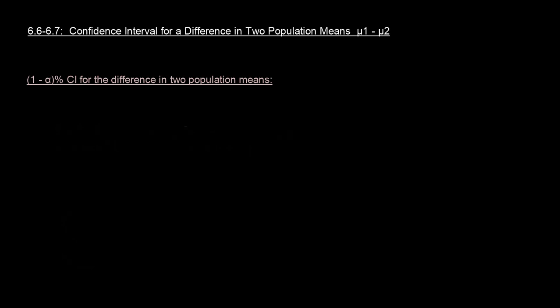So we've seen a confidence interval to estimate a single population mean, but now what we're going to do is use a confidence interval as a comparison, as a tool to make a comparison between two population means. So in a confidence interval we have the general structure, so I'm going to rewrite what that structure looks like.